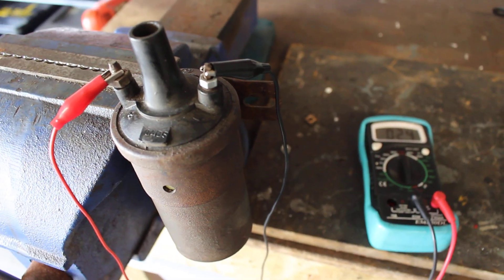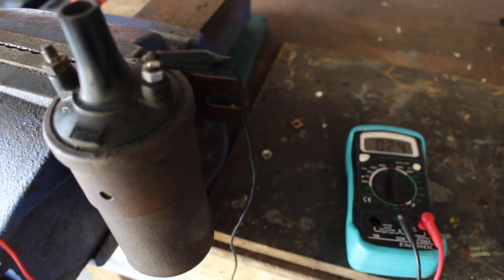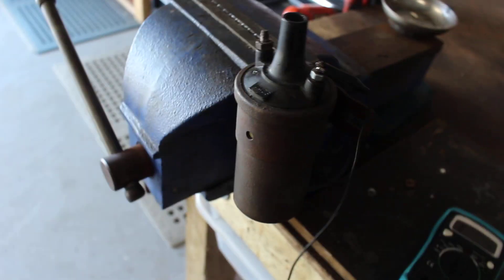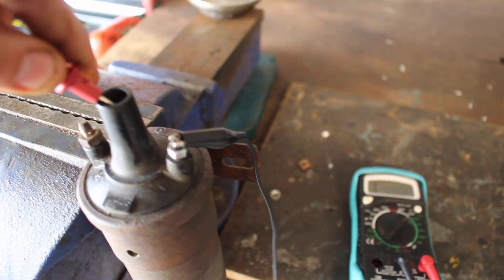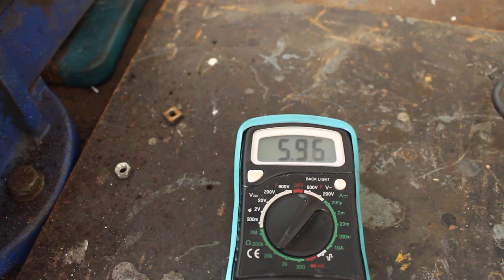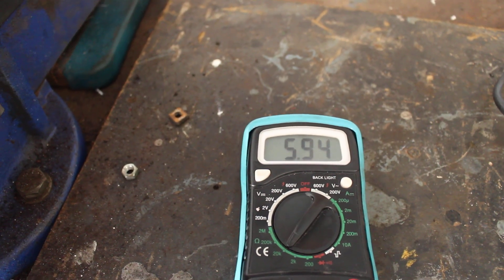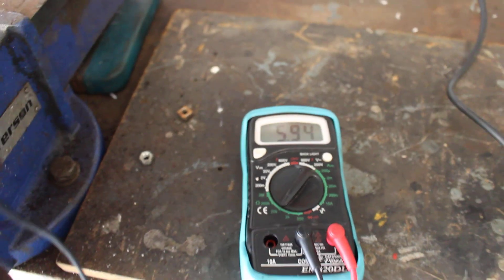So I'm going to check the secondary coil for resistance now. We turn that up to 20k ohms and put in the probe. And that's coming in at 5.36. So that seems to be functional.